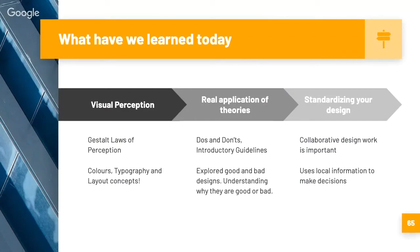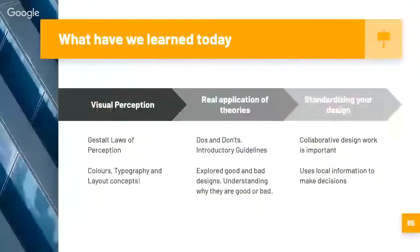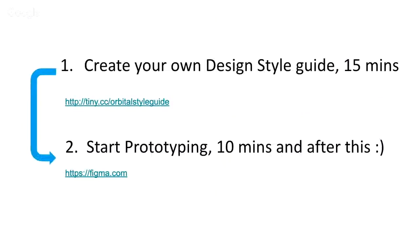These are the things we have learned today: visual perception concepts, real application of theories with examples of do's and don'ts. Hopefully everyone can understand it clearly. These are some of the advice we have talked about. Let us jump to the hands-on workshop component — let me set out the slides first and then we can get started.